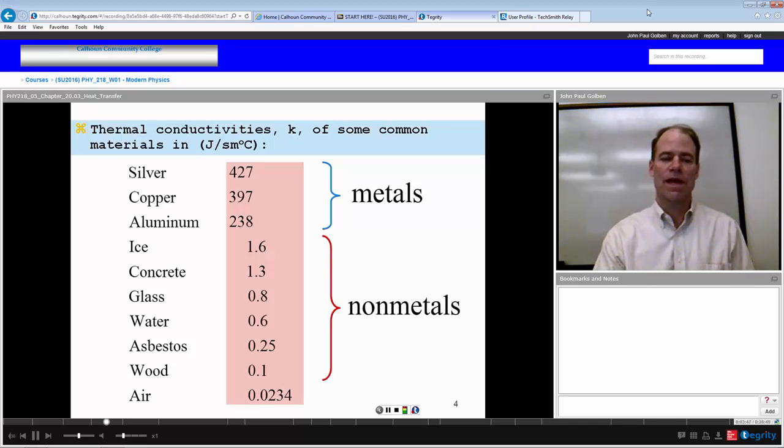On the other hand, we have some non-metals that are good insulators: ice, concrete, glass, water, asbestos, wood. These are good insulators.